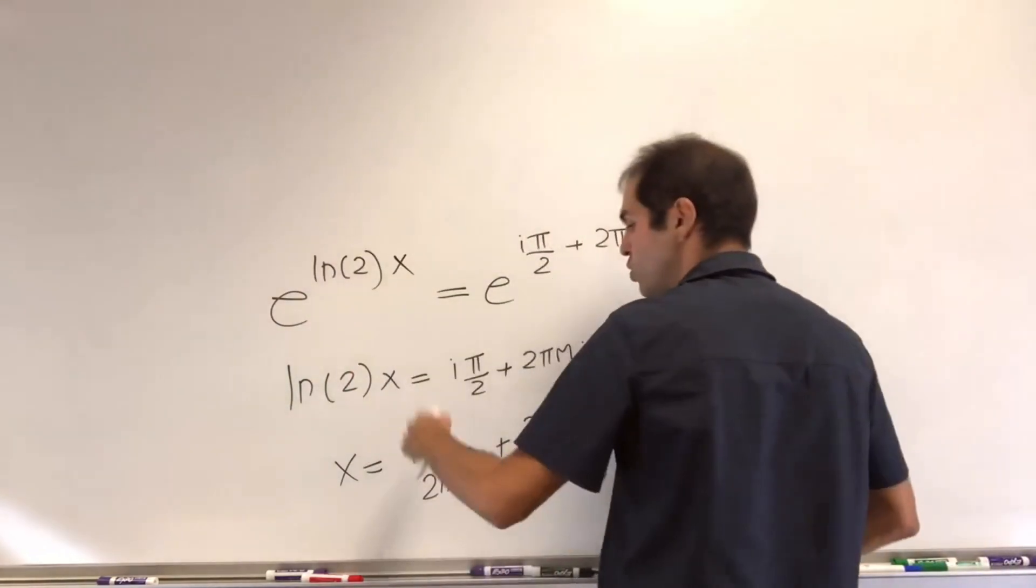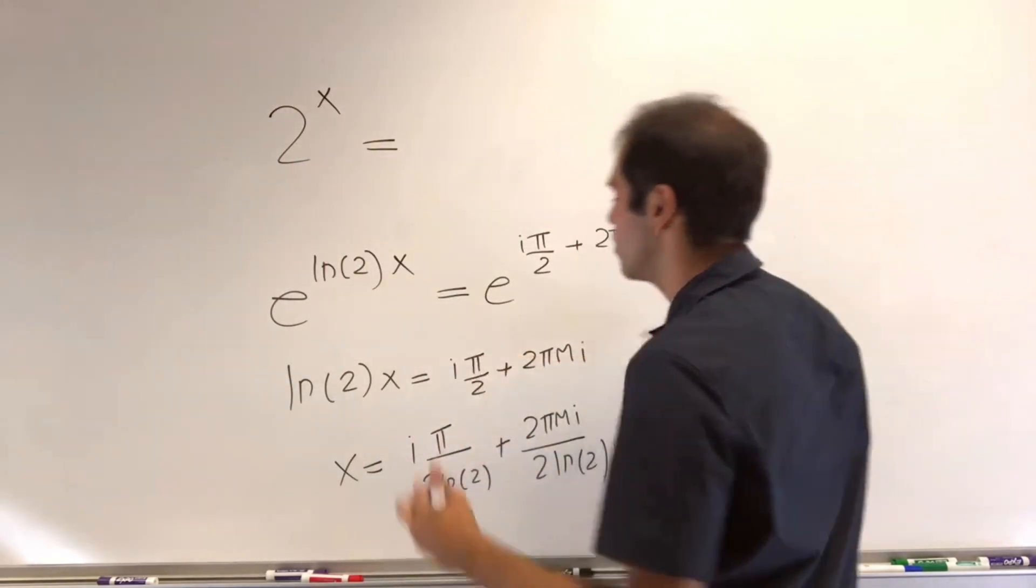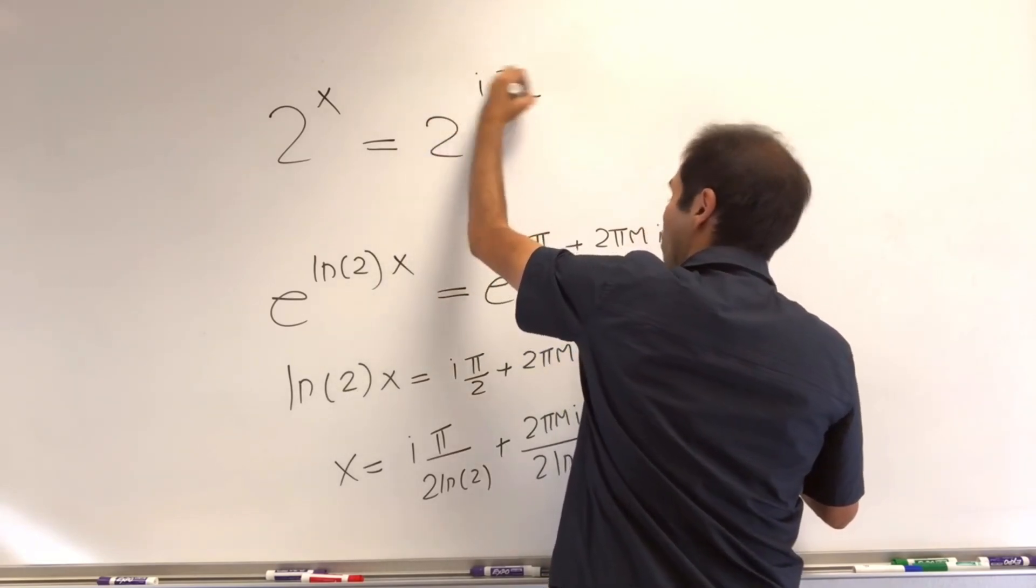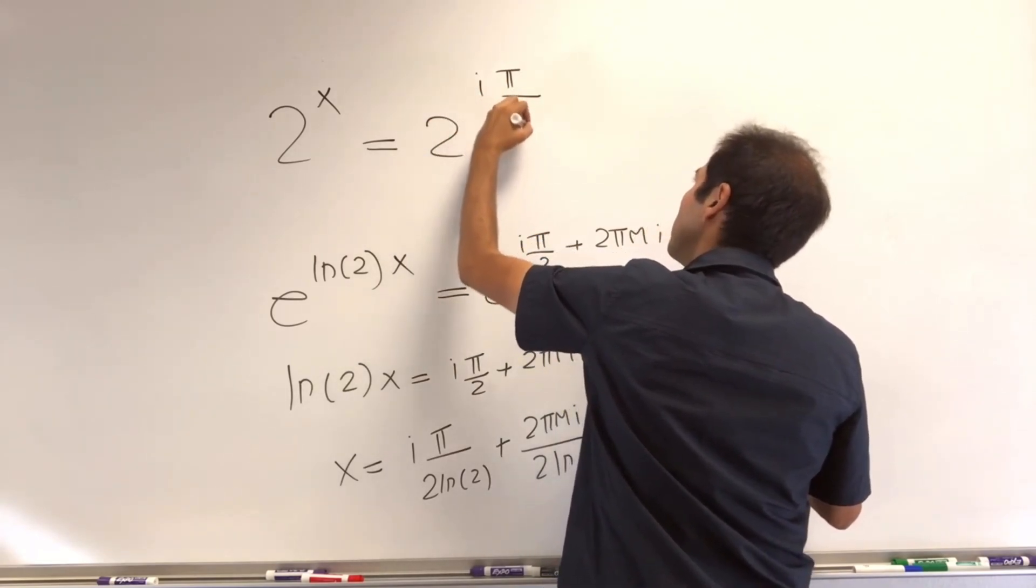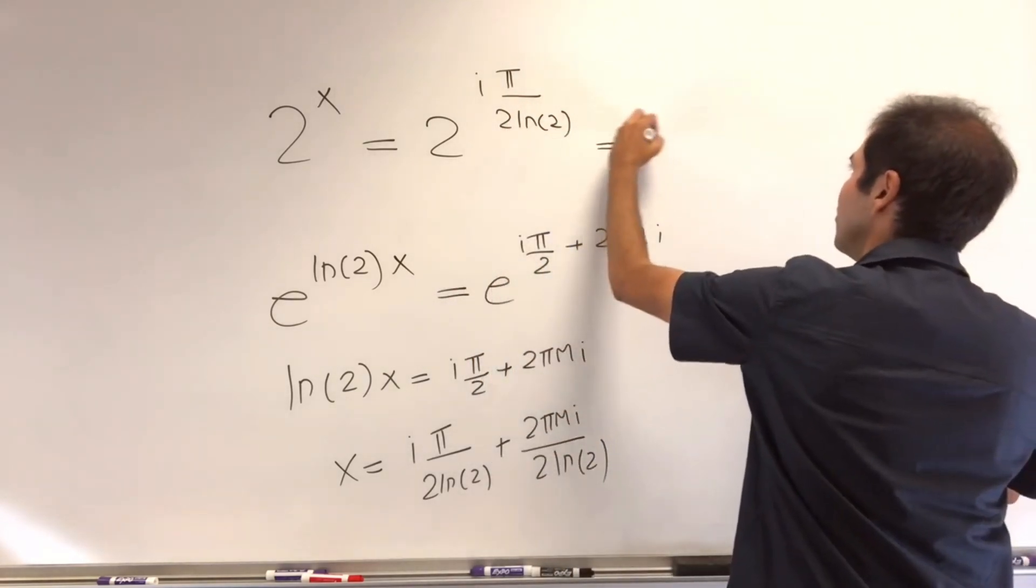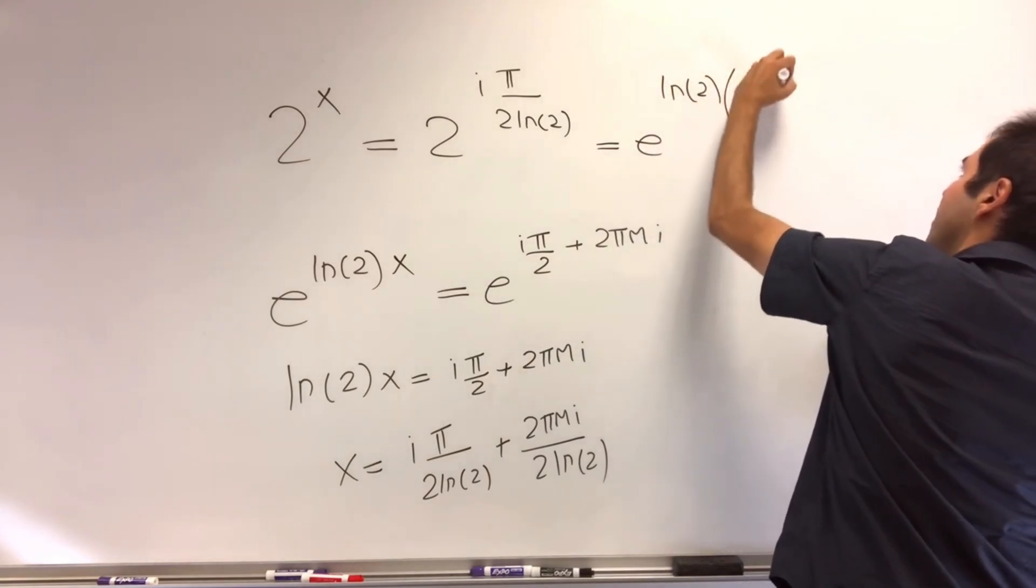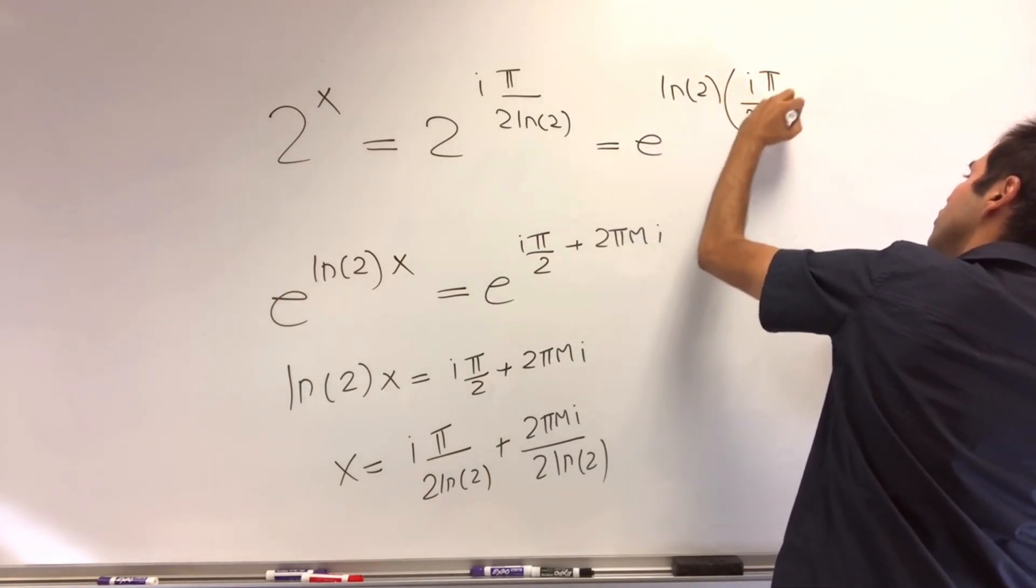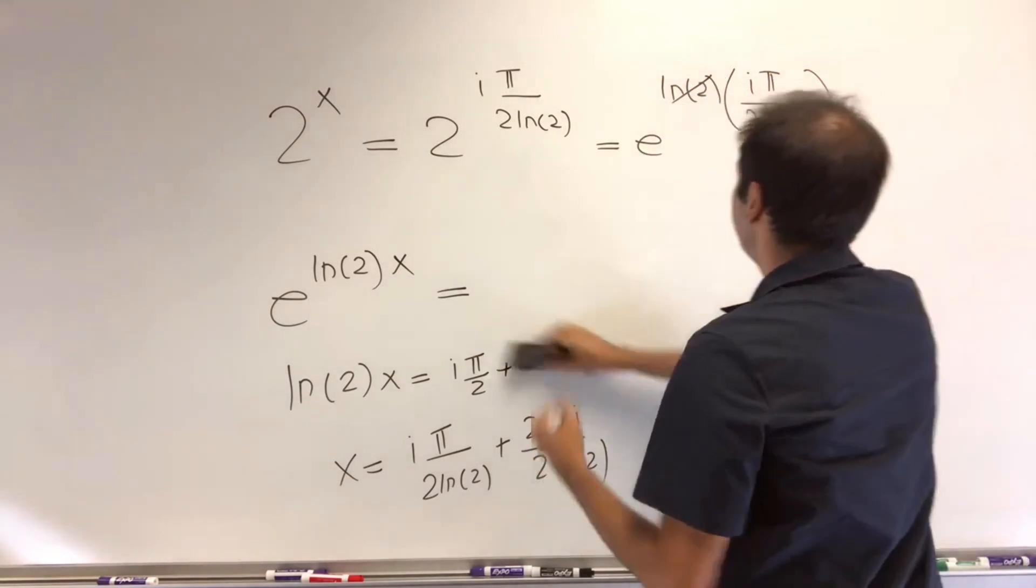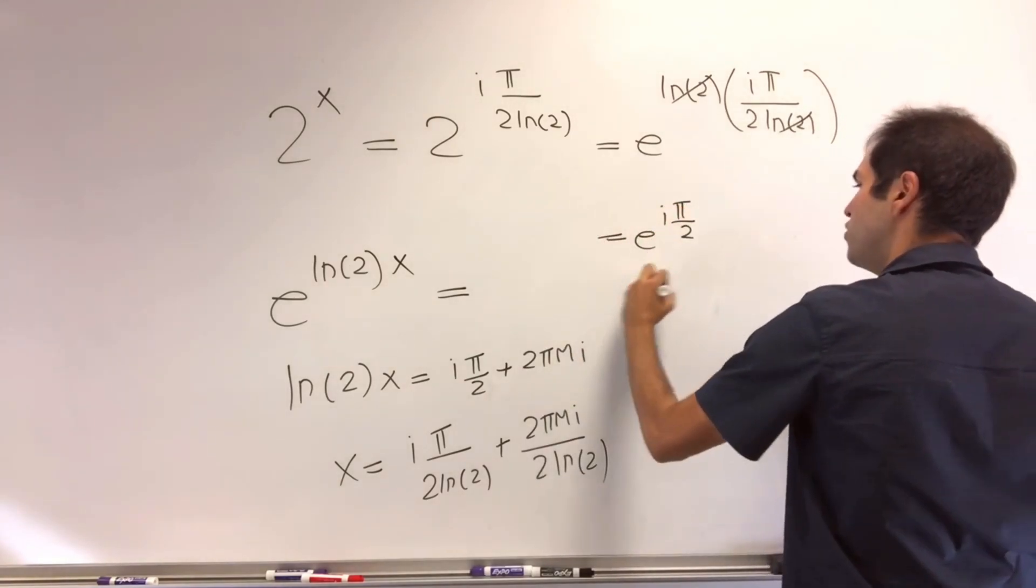So let's calculate 2 to the x. So 2 to the x, that becomes, let's just focus on this part, 2 to the i pi over 2 ln of 2. But again, 2 is e of ln of 2, so it's e of ln of 2 times i pi over 2 ln of 2. Then the 2's cancel out, and you end up with e to the i pi over 2, and that gives you i.